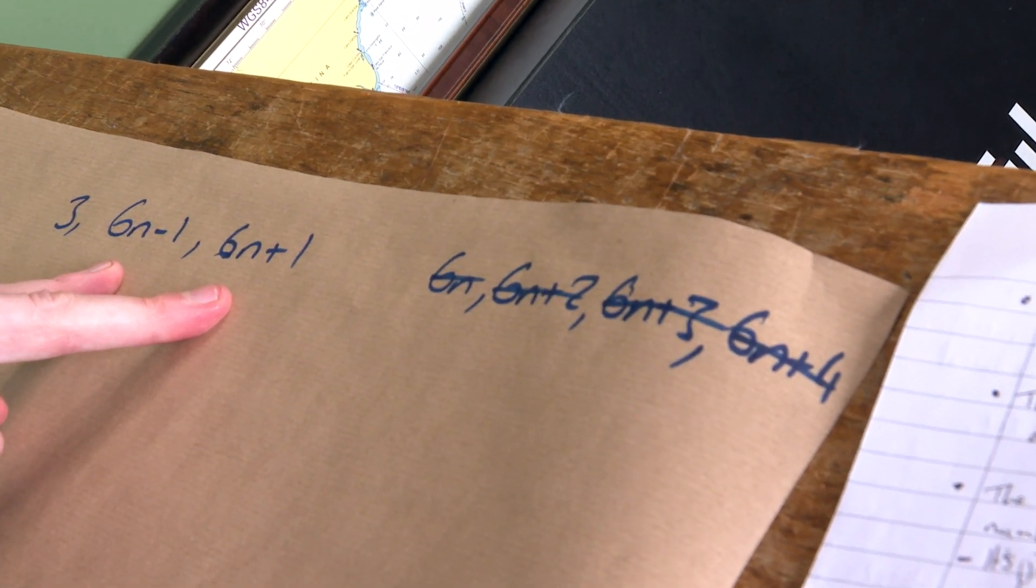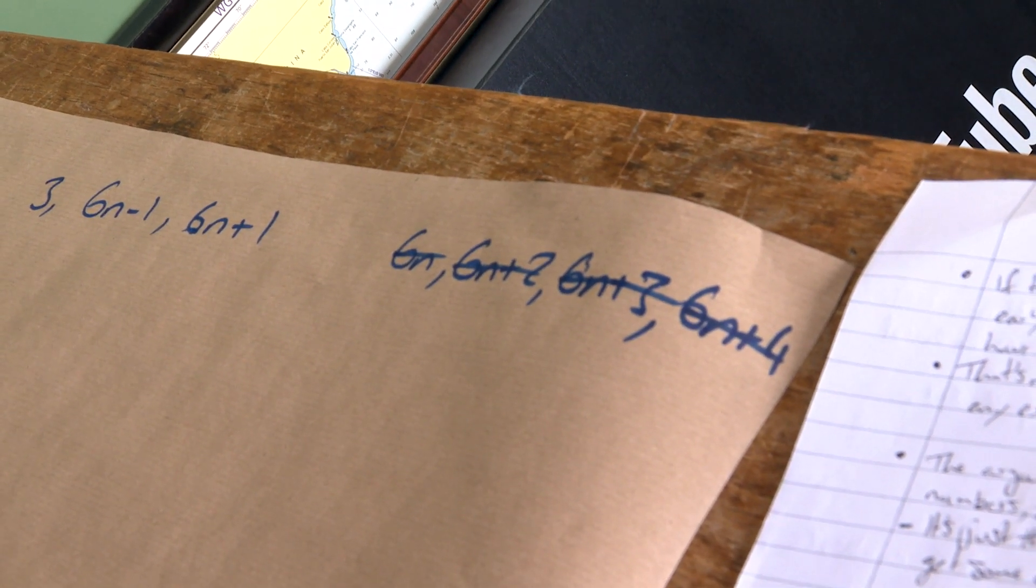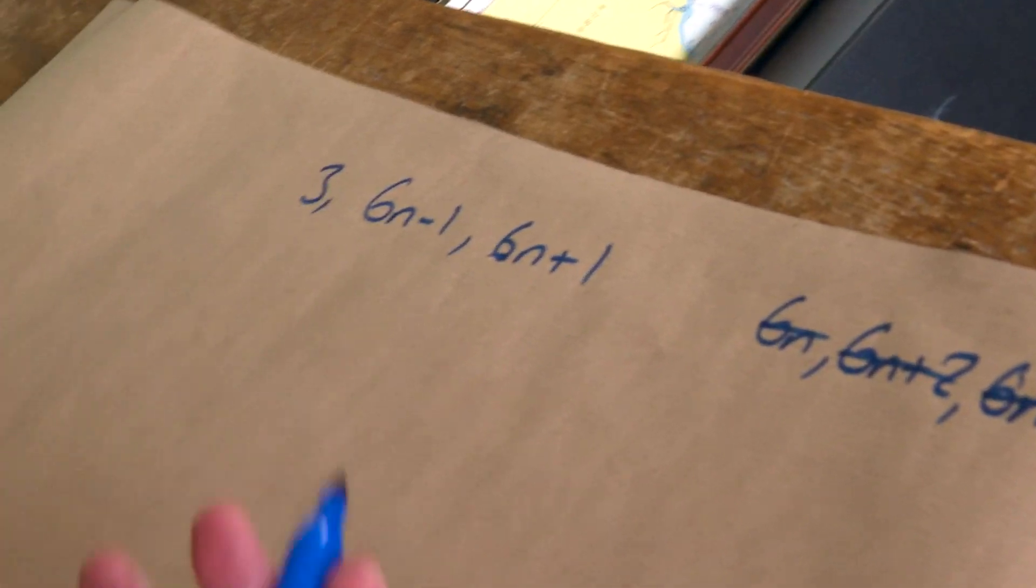The only other possibilities are these numbers that are sort of either side of a multiple of 6. 6n plus 5 is the same as saying 6n minus 1, because it's like 1 less than a multiple of 6. And the pairs are always either side of a multiple of 6, or it's 3, which is the only exception to that. And not all n's work, some n's work, some n's don't work. But if you're going to have a twin prime, it's going to be either side of some kind of multiple of 6.